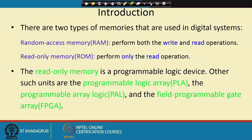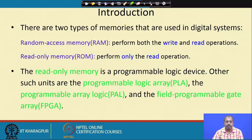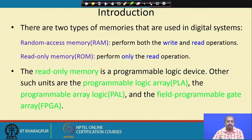There are two broad types of memories used in digital systems. One is known as random access memory or RAM, and another is read only memory or ROM. In random access memory you can perform both write and read operations, and in read only memory you can perform only the read operation. Though the name random access memory is somewhat misleading — it seems as if there is some other memory which is sequential access.